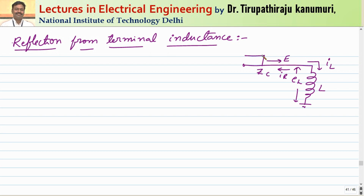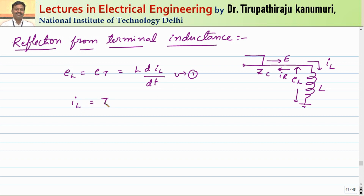The incident voltage wave is a constant magnitude wave, represented by e — it is not varying with respect to time. At the terminal load, the voltage at the load equals L into di_l by dt (equation 1). The total current transmitted, i_l, is equal to the incident current plus the reflected current. At any point, the total current is the sum of incident current plus reflected current.